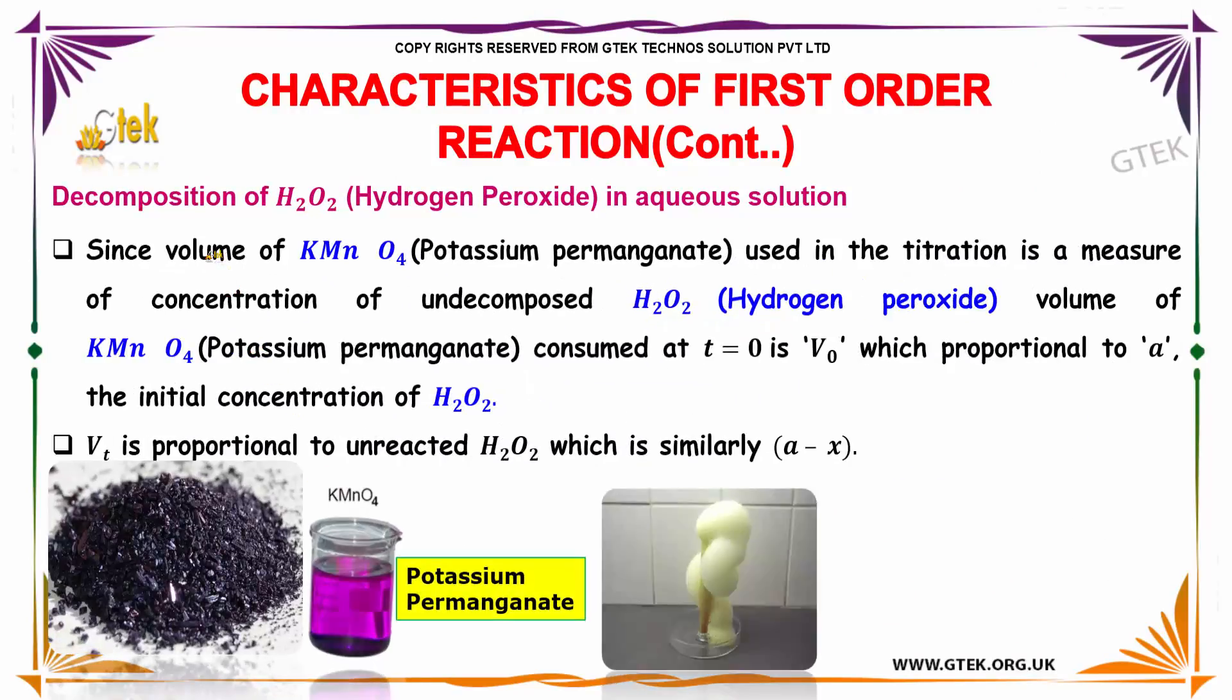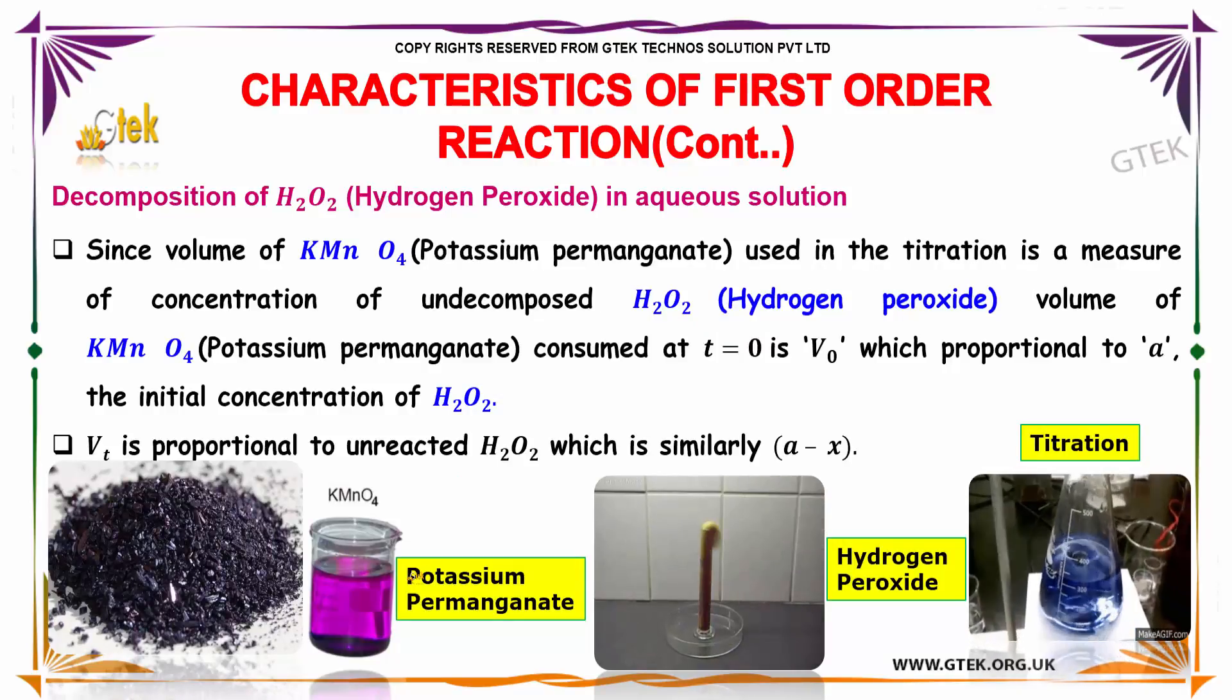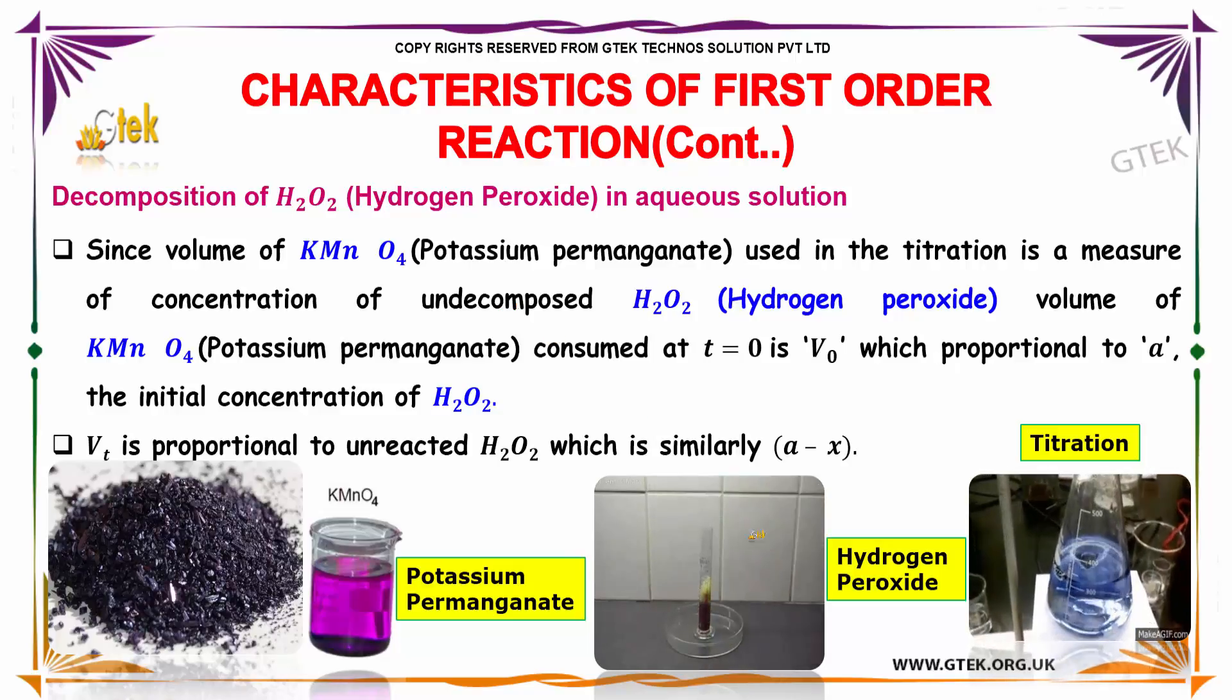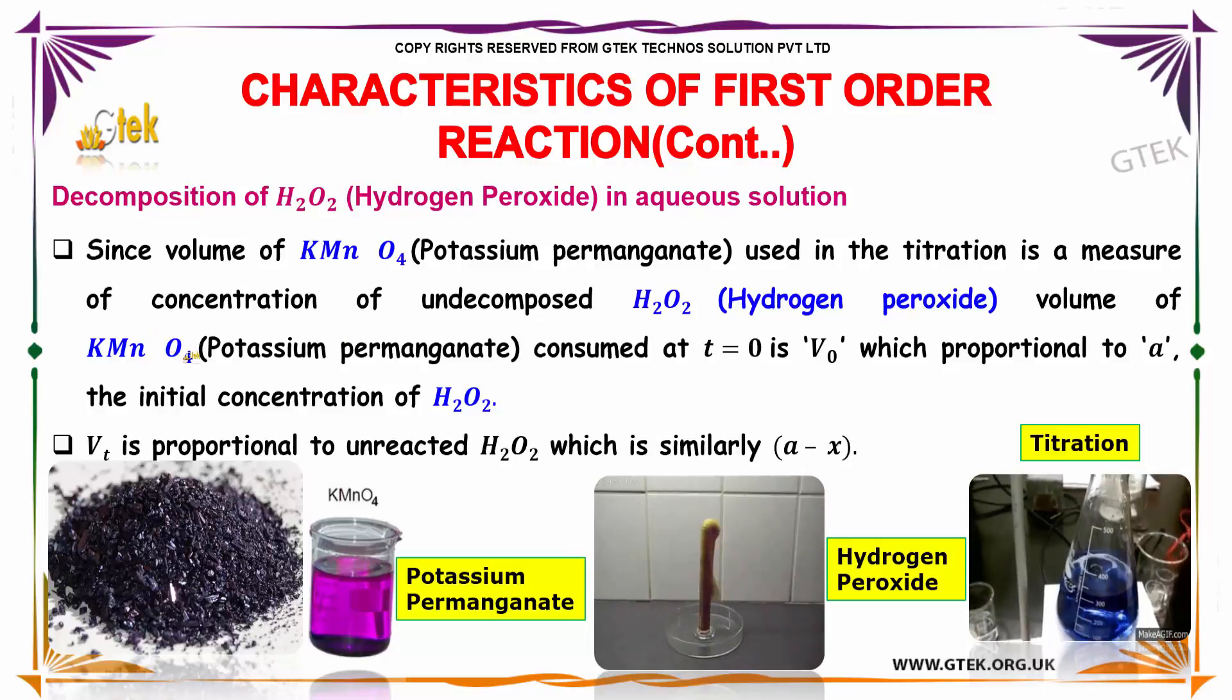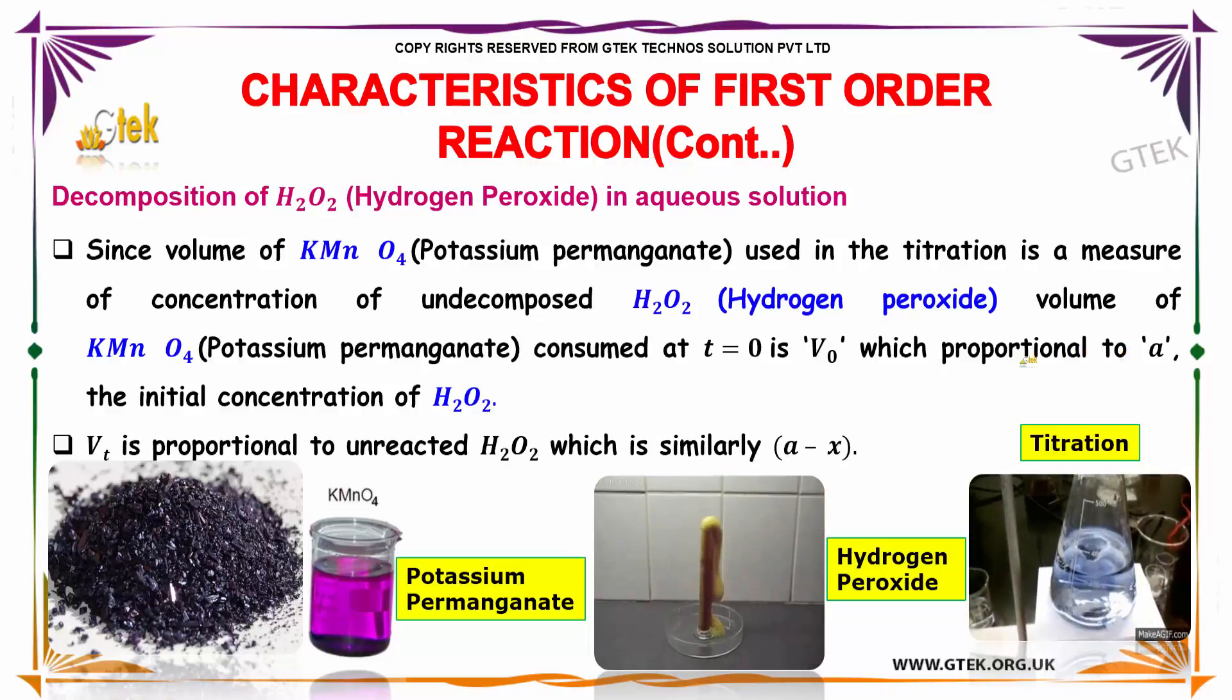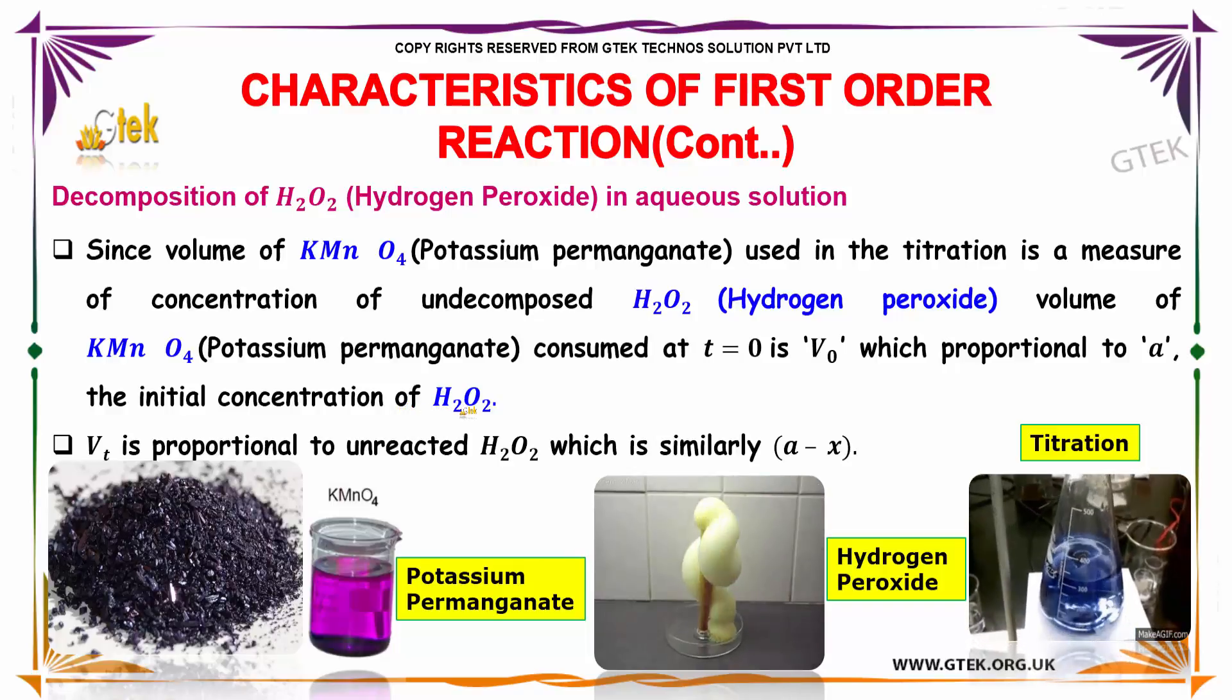Since volume of potassium permanganate used in the titration is a measure of concentration of undecomposed hydrogen peroxide, volume of potassium permanganate consumed at t equals 0 (V0) is proportional to A, the initial concentration of hydrogen peroxide.